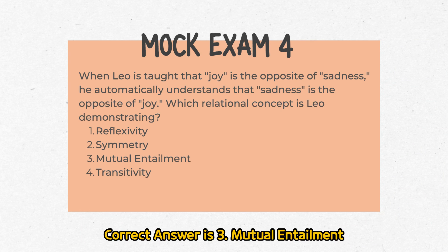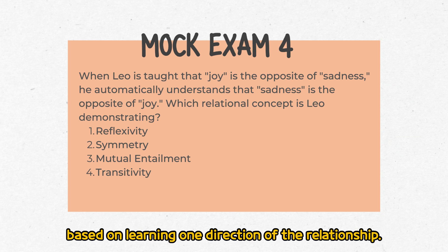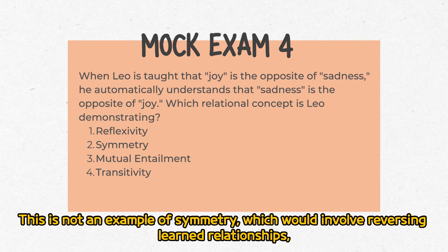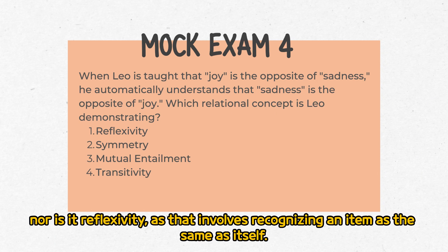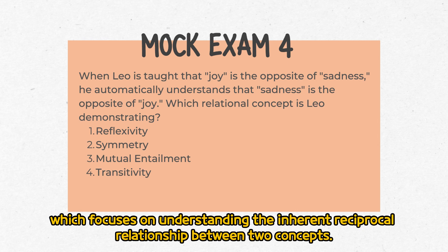The correct answer is 3: Mutual entailment. Leo demonstrates mutual entailment by understanding the reciprocal nature of the relationship between joy and sadness, based on learning one direction of the relationship. This is not an example of symmetry, which would involve reversing learned relationships. Nor is it reflexivity, as that involves recognizing an item as the same as itself. Transitivity, involving deducing a new relationship from two existing ones, does not apply here — this scenario focuses on understanding the inherent reciprocal relationship between two concepts.